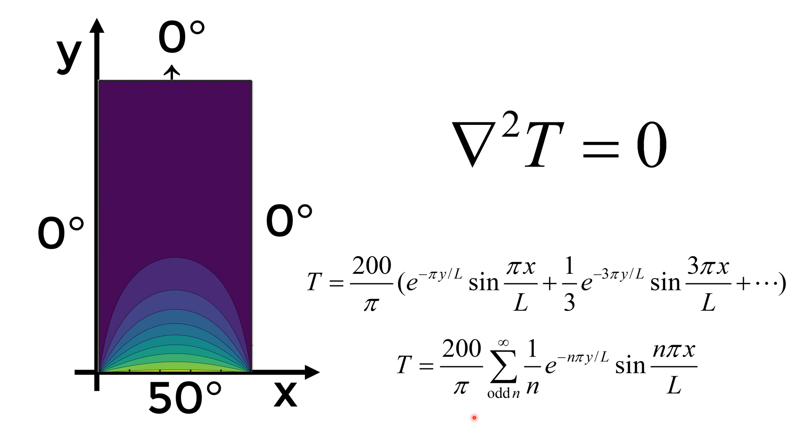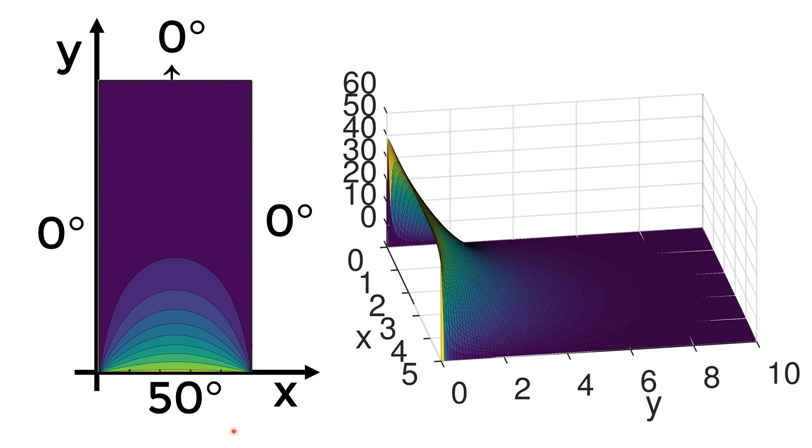The compact form of the solution can be written using infinite sum with the coefficient related to n. At the end of this video, I will show you how to come up with the contour and surface plot for the steady state temperature distribution within the 2D metal plate.